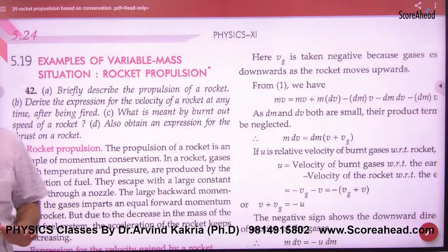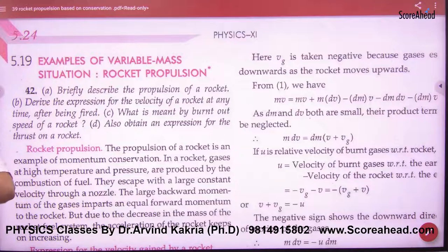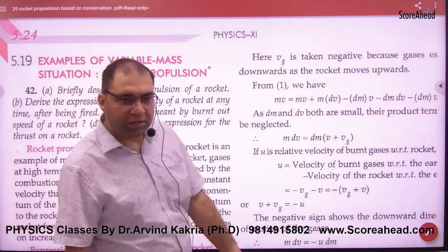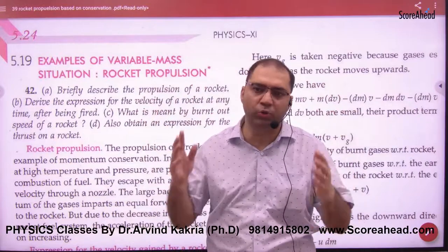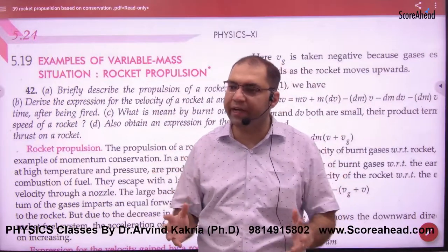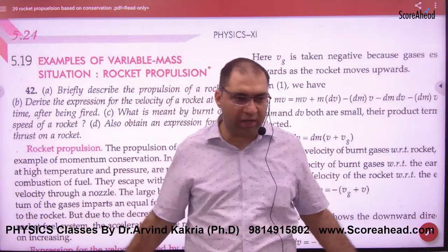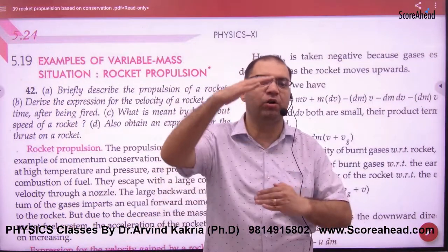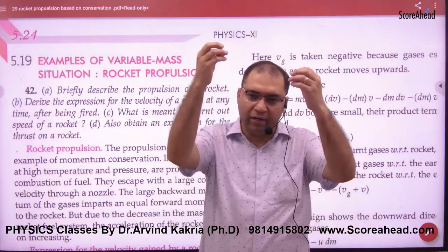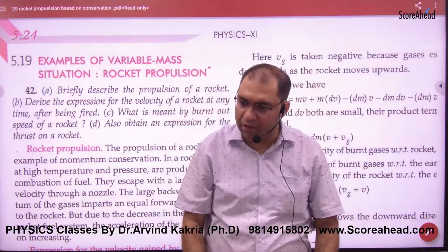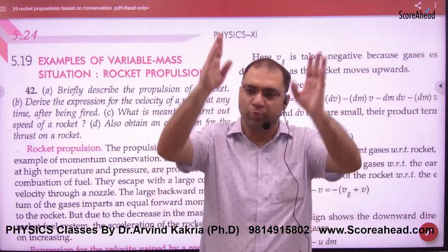In rocket propulsion, the variable mass situation applies. When the rocket goes up, it carries a lot of fuel, and the major weight of the rocket remains in fuel. The fuel burns in gas form, and as gases go down, the rocket's mass decreases and its velocity increases, generating momentum terms M1, V1, M2, and V2 as the rocket goes up.